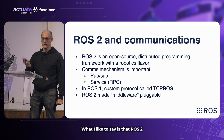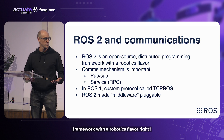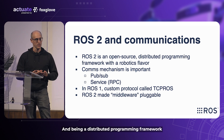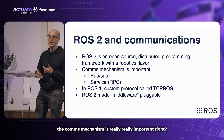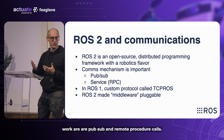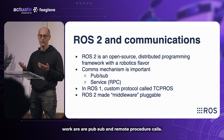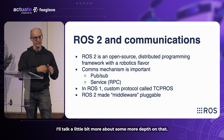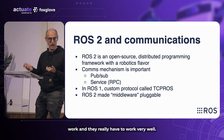ROS2 is an open-source distributed programming framework with a robotics flavor. Being a distributed programming framework, the communications mechanism is really, really important. The basic things that need to work are pub-sub and remote procedure calls. Those are the basic things that have to work, and they really have to work very well.